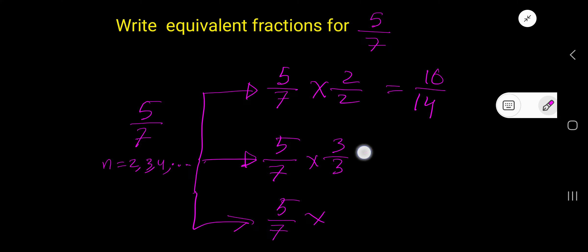If you multiply here by 3, then you are getting 15 over 21. If you multiply here by 4, then you are getting 20 over 28.